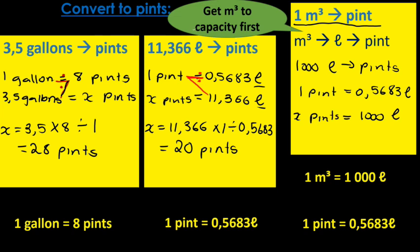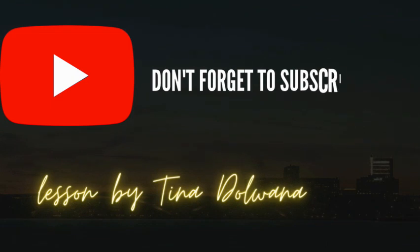And then I will draw my seven. So I will go from 1000 times by 1 divided by 0.5683. So we have x is equal to 1000 times by 1 divided by 0.5683. And the answer you should get is 1759.63 pints. And that's it. Thank you.